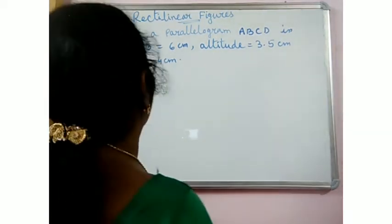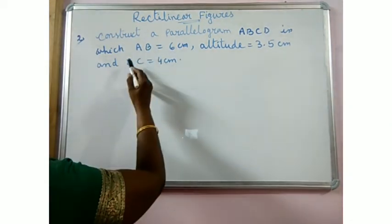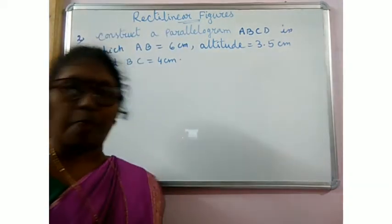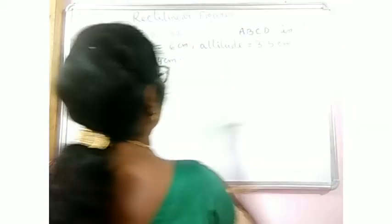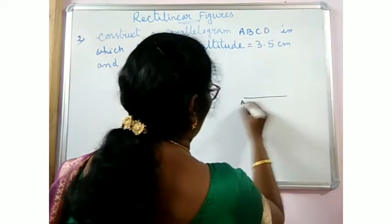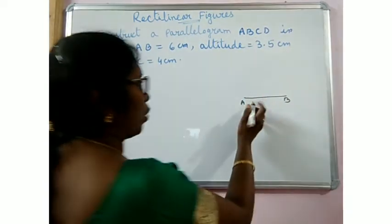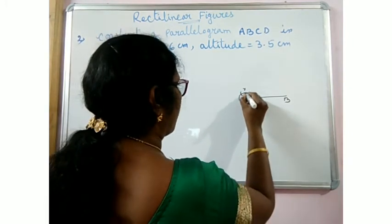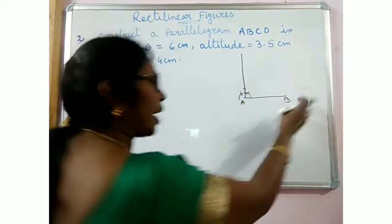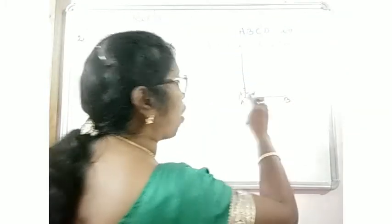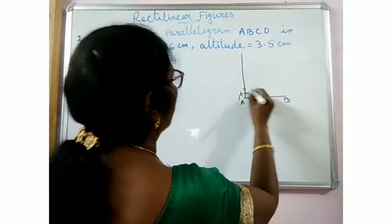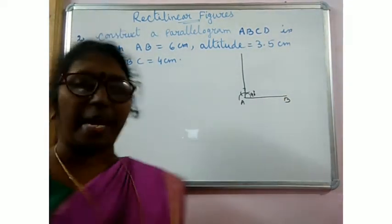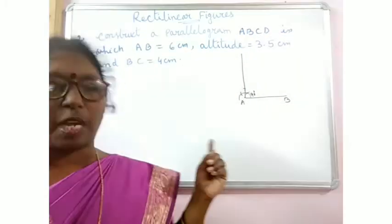So let us draw the rough diagram first. That means AB and BC — two sides — are given to you, and the altitude from AB is given. Altitude means the distance between two parallel sides. Take AB as one side. Altitude means perpendicular, so construct a 90 degree angle. You can construct the 90 degree angle at any point on line AB. AB is one of the sides of the parallelogram, and the altitude is 3.5cm — that means the distance between the two parallel sides is 3.5cm.